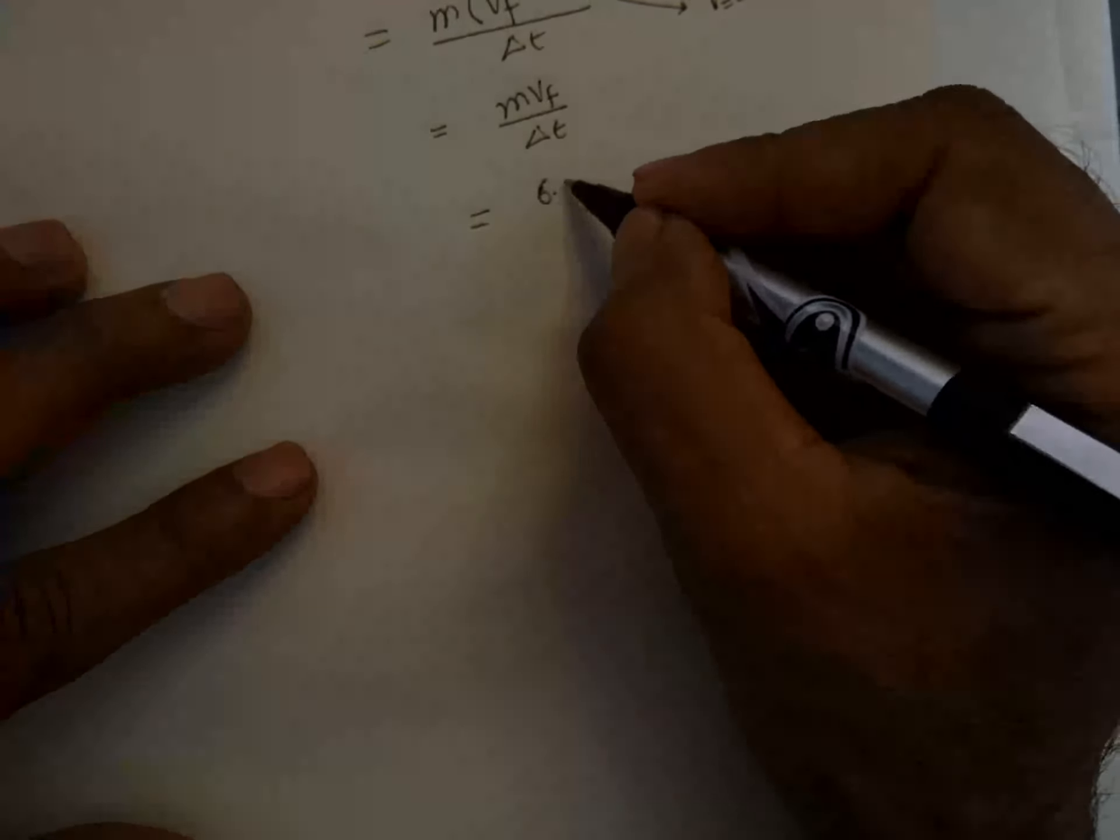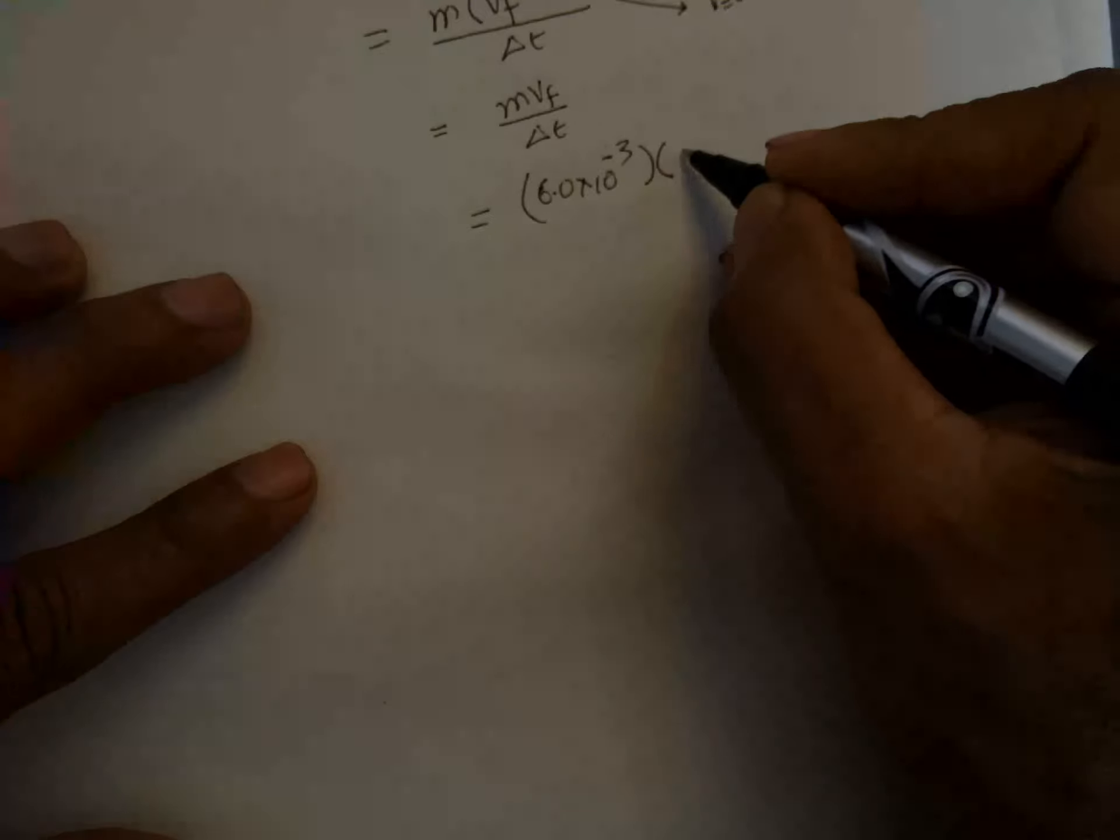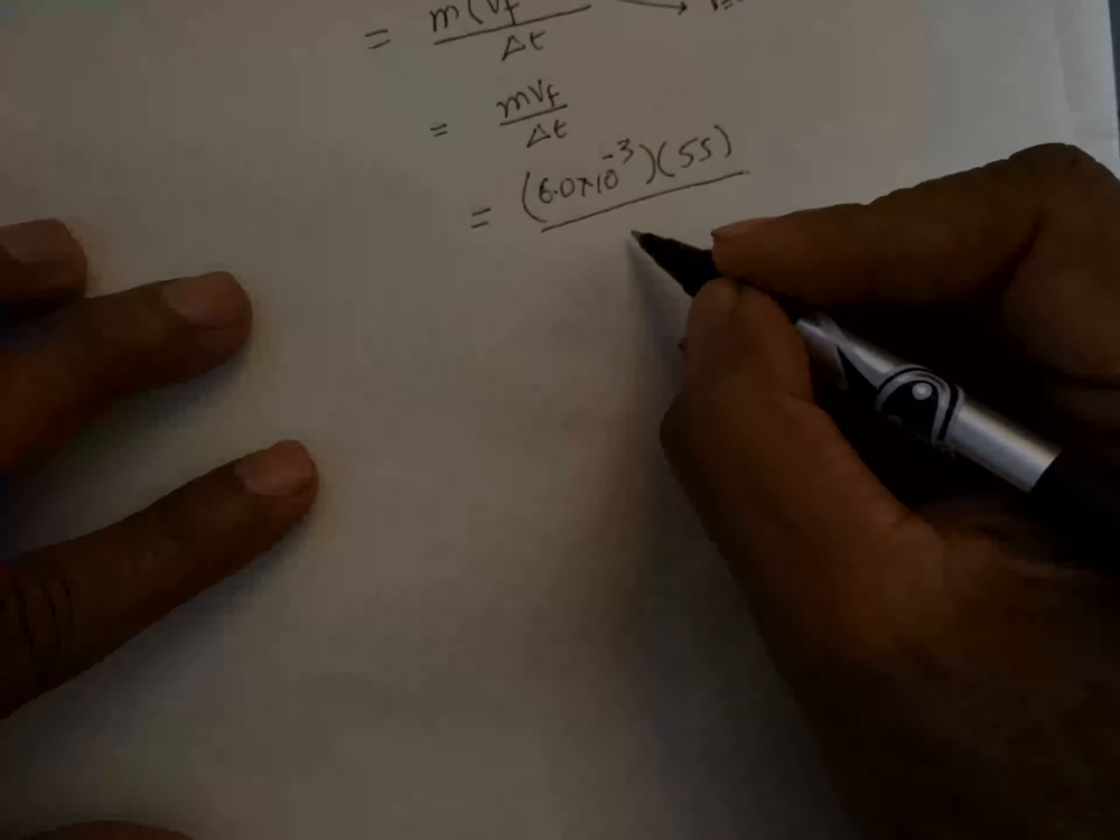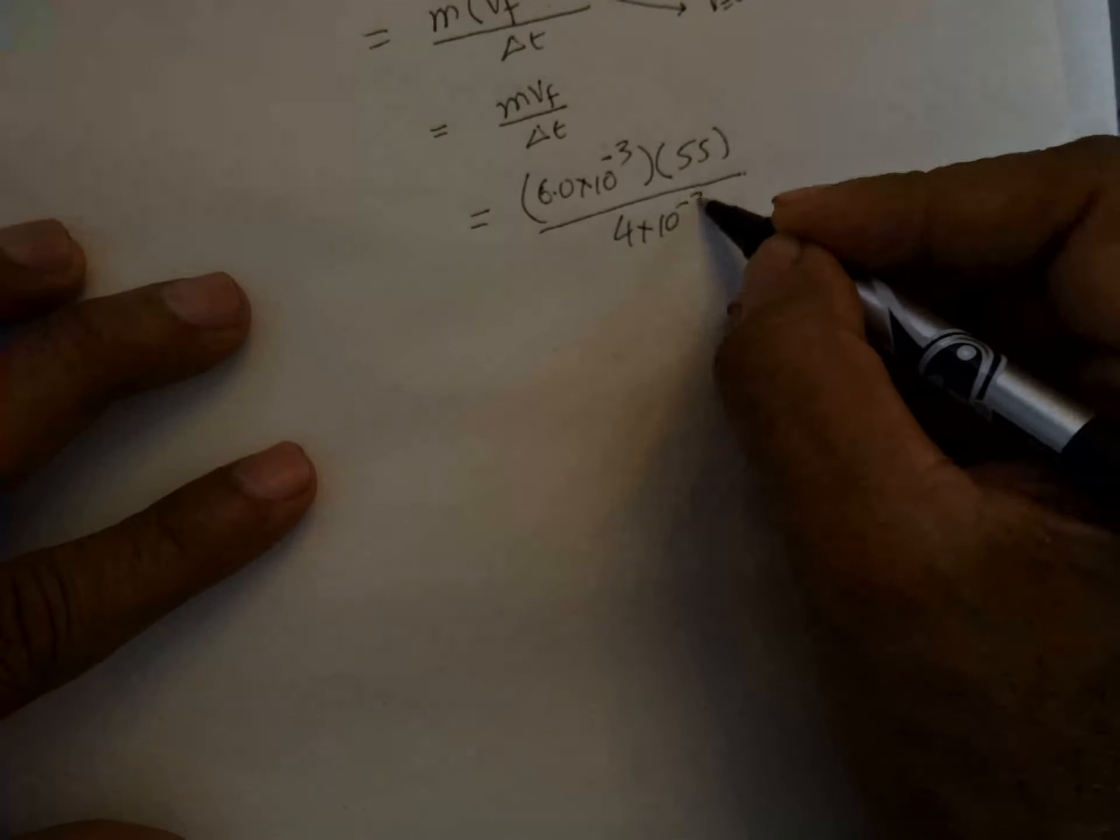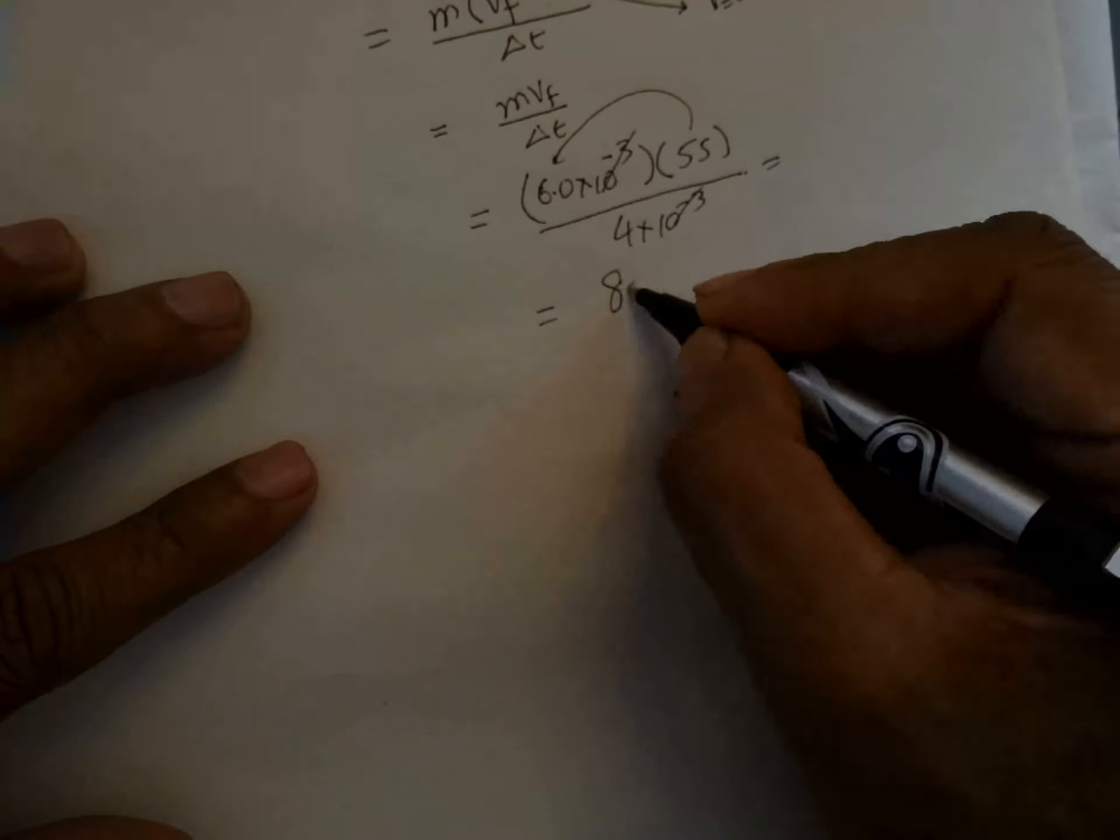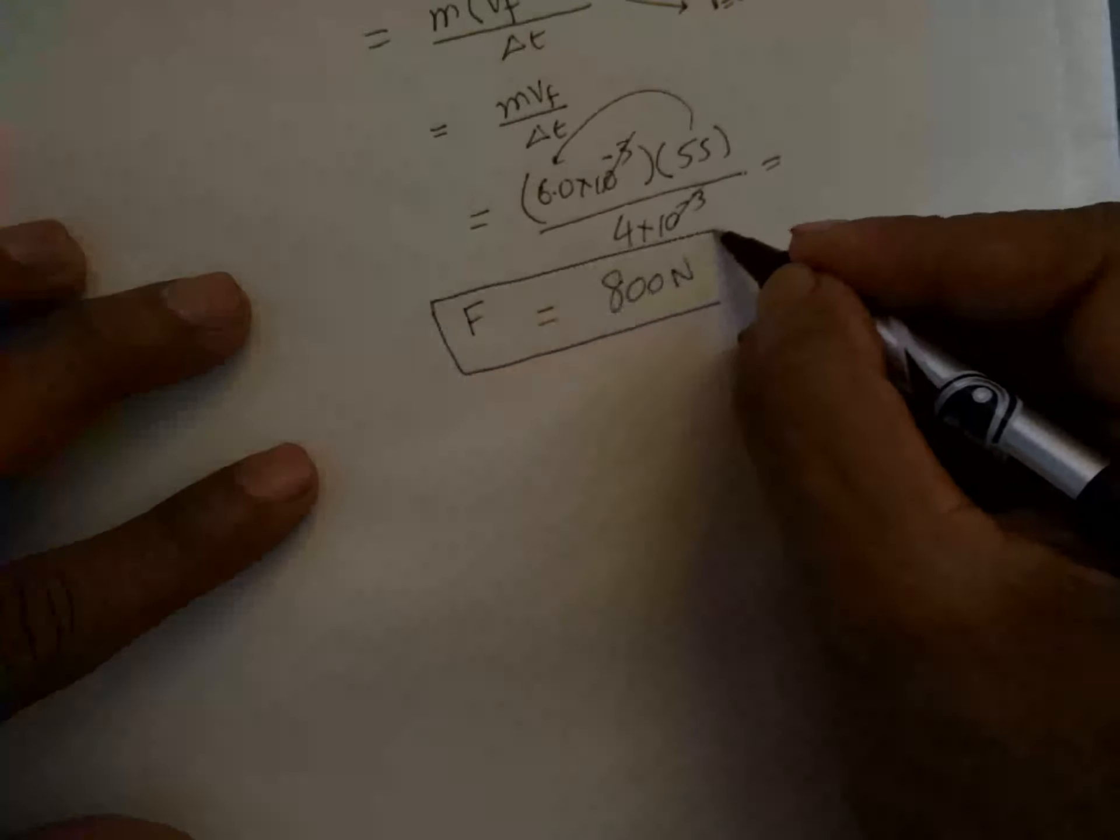Mass is 6.0 times 10^-2 kg times velocity 55 meters per second, divided by time, which is 4 times 10^-3 seconds. If you multiply these, this cancels, which is equal to about 800 newtons. This is the force exerted on the ball from the player.